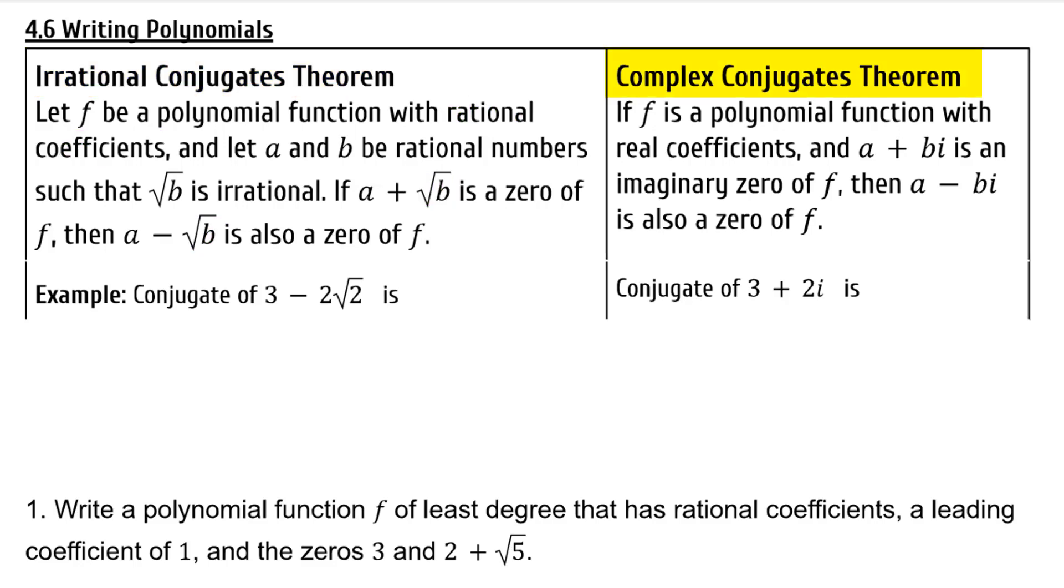If f is a polynomial function with real coefficients, and a plus bi is an imaginary zero of f, then a minus bi is also a zero of f. Because if one of your zeros has an imaginary part, but the coefficients of the polynomial are all real, then the conjugate must be another zero of this polynomial.